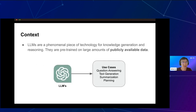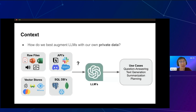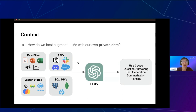Large language models are a phenomenal piece of technology for knowledge generation and reasoning. They're pre-trained on large amounts of publicly available data and can be used for a variety of use cases — answering questions, generating arbitrary amounts of text, summarizing text, and planning different types of actions. Anybody building LLM applications asks themselves: how do we best augment LLMs with our own private data? Whether you're an individual with files on your hard drive, or an enterprise user with workplace applications like Notion, Slack, or Salesforce, or using an enterprise data lake with a variety of databases — how do you augment language models with data stored in these different sources?